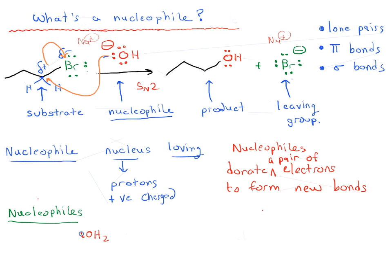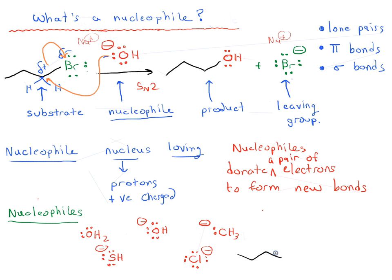Any species with a lone pair can potentially act as a nucleophile. Some simple examples: water can act as a nucleophile; hydroxide ion, which we've seen; the sulfide ion SH⁻; CH₃⁻ with a lone pair and a negative charge; a halide ion like Cl⁻; an alkyl group attached to a nitrogen with a lone pair; and a carboxylic acid, which can have a lone pair on the carbonyl oxygen or on the hydroxyl oxygen. All of these species can act as nucleophiles because they all have lone pairs.